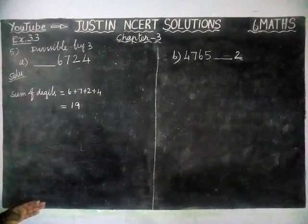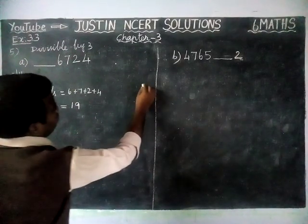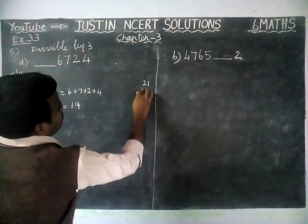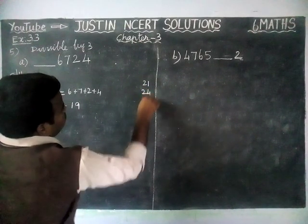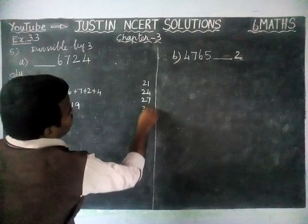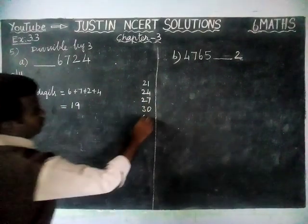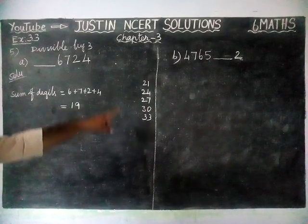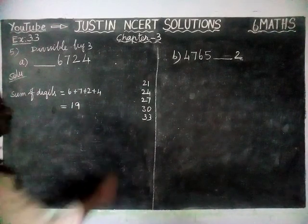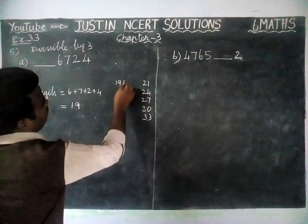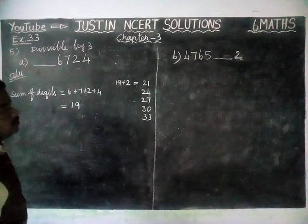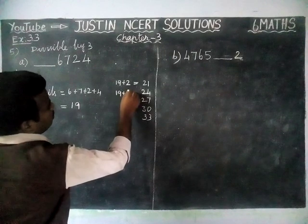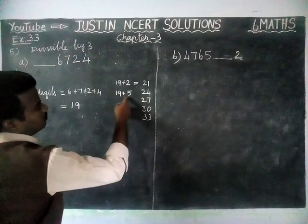Now we are going to check the next multiple of 3. We are going to check: if we add 19 with what number, we get a multiple of 3. 19 plus 2 gives us 21. Next, 19 plus 5 gives us 24.